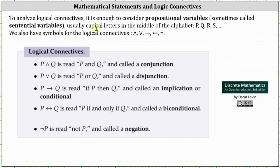To analyze the logical connectives, it is enough to consider propositional variables, sometimes called sentential variables, usually capital letters in the middle of the alphabet such as P, Q, R, S, and so on. We also have the symbols for the logical connectives. So looking below, first we have P and Q, which is called a conjunction. Next we have P or Q, which is called a disjunction. Next we have if P then Q, which is called an implication or conditional, and then we have P if and only if Q, which is called a biconditional, and finally we have not P, which is called a negation.